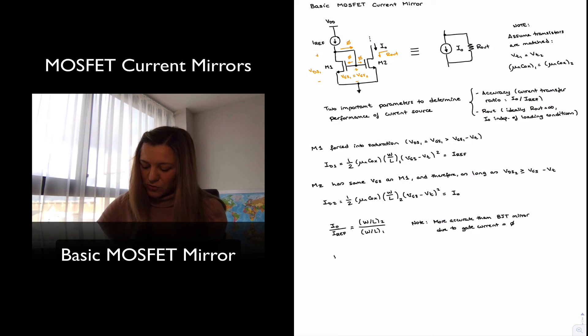And the output resistance for the circuit is obviously going to be the output resistance looking into the drain of M2, which is little r O 2. And the way we calculated little r O 2 is 1 over lambda times ID. Or, if you want to express it in terms of the early voltage, it will just be the early voltage over ID. Even though normally with MOSFET transistors, it's more common to see the lambda.